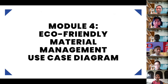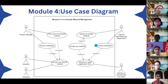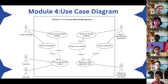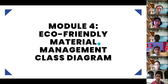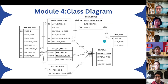The last module is module four: eco-friendly material management. In the use case diagram, there are five actors — project manager, scientist, ecologist, minister of environment and water, and the head of manufacturing department — and we can see the relationships between those actors and the use cases. For the class diagram, there are user factory, application form, list of material, record form, material, call status, and user government.